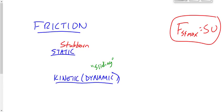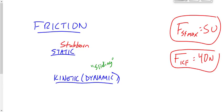Now it would be kinetic friction — once it's moving, it's kinetic friction. And kinetic friction in that case might be 40 newtons. Static friction was 20, then 30, then 40, then 45 — static friction isn't always bigger than kinetic friction, but the maximum static friction of 50 is bigger than kinetic friction.